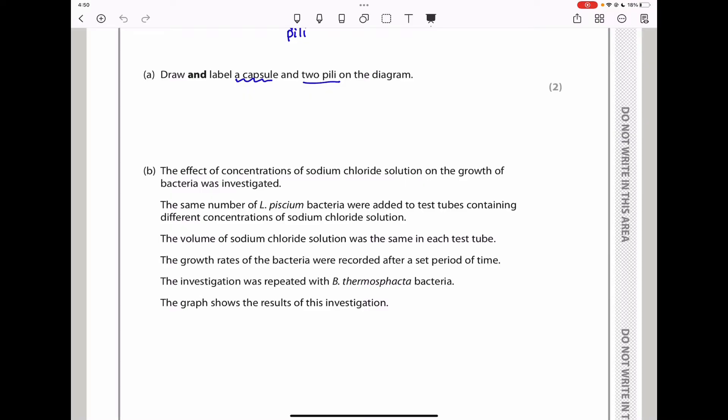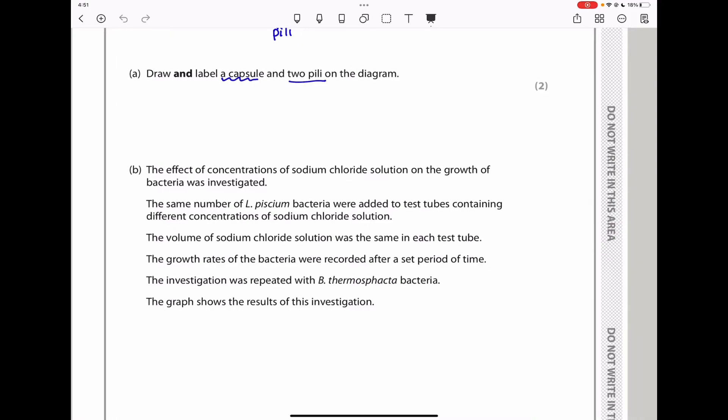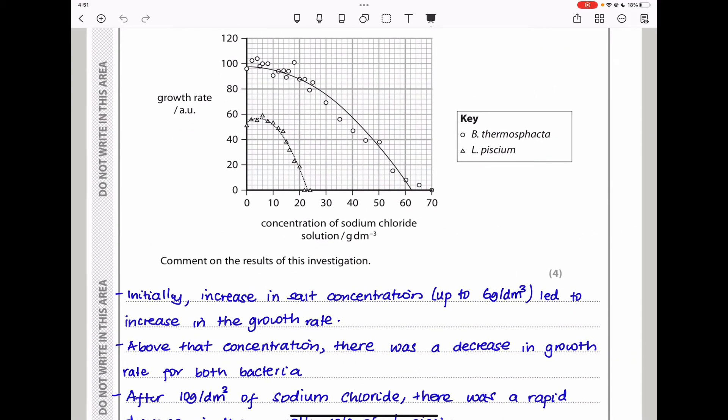Part B says: the effect of concentration of sodium chloride solution on the growth of bacteria was investigated. The same number of L. PCM bacteria were added to test tubes containing different concentrations of sodium chloride solution. The volume was the same in each test tube to ensure consistency. The growth rates were recorded after a set period of time. The investigation was repeated with B. thumosfactor bacteria, and the graph shows the results.